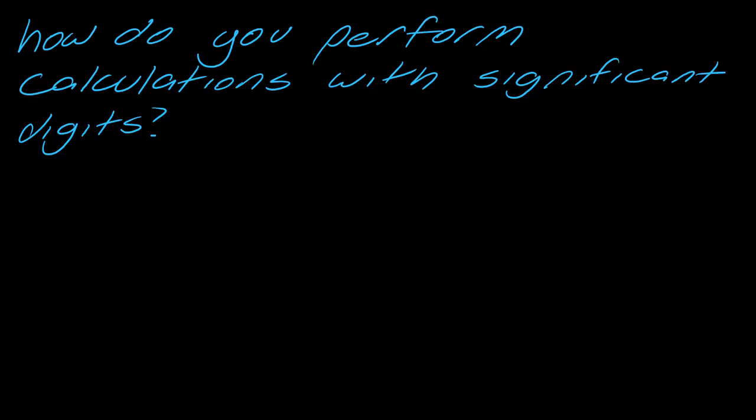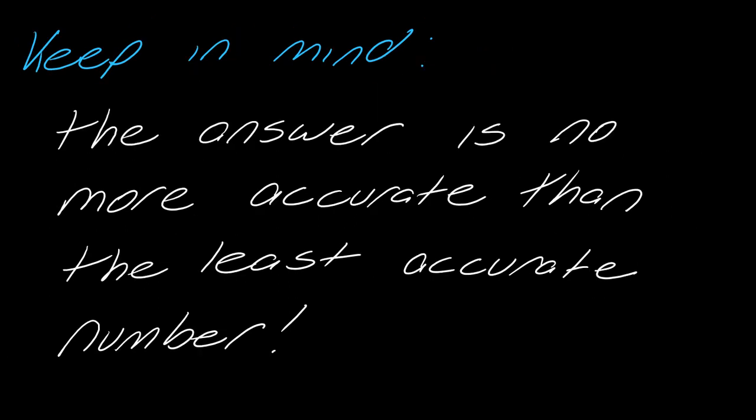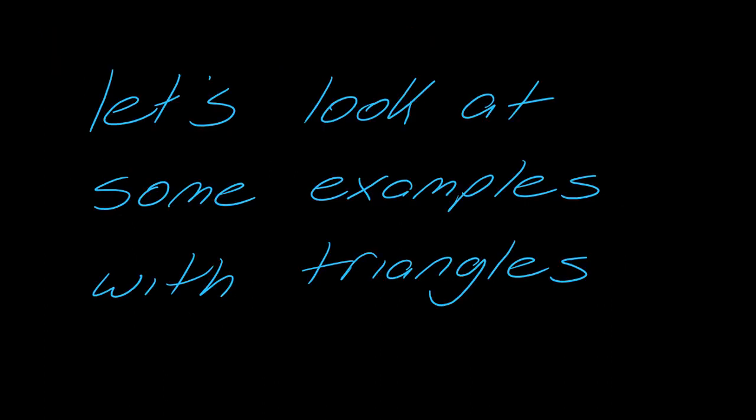How do you perform calculations with significant digits? You want to note the least number of significant digits, and then round the final answer to that many digits. Look for what the least number is, and then round to that many. Keep in mind that the answer is no more accurate than the least accurate number. Sometimes they get called significant figures or sig figs, by the way.